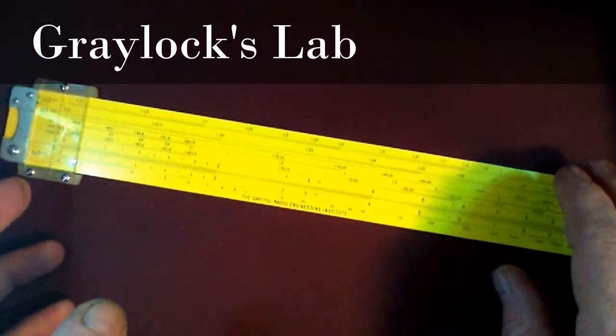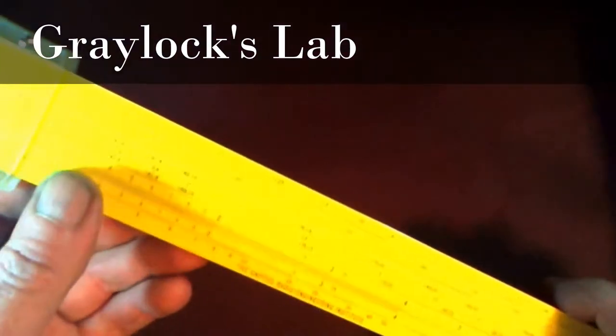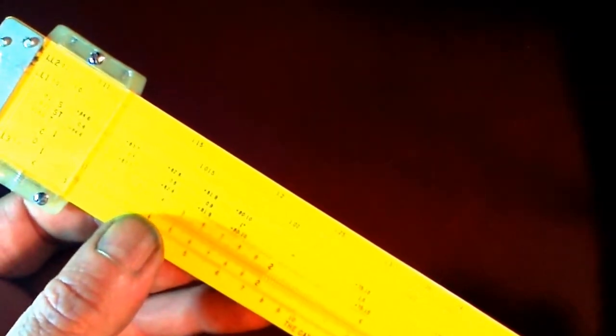Hi guys. Today on Greylock's Lab, I'm going to show you how to use the slide rule to multiply 42 times 6.